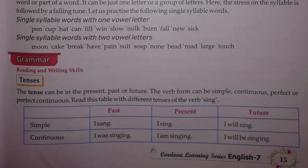In past continuous, we apply subject plus was/were according to the sentence — it depends on whether the subject is singular or plural. If your subject is singular, the helping verb will be singular; if plural, the helping verb will be plural. For example: 'I was singing' — here 'I' is subject, 'was' is helping verb, and 'singing' is V1 plus ing. For present continuous, the form is subject plus is/am/are plus V1 plus ing.